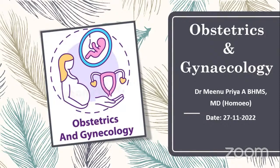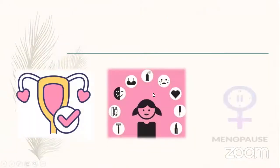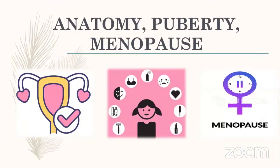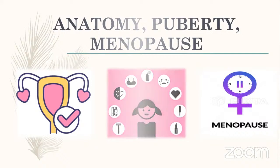Good evening. Today the topic will be from Obstetrics and Gynecology — specifically the anatomy of the female genitalia, puberty, and menopause. This topic covers both anatomy and physiology, so puberty, menopause, and adolescence all fall under the physiology of the female genital tract. Both anatomy and physiology will be covered in this class.